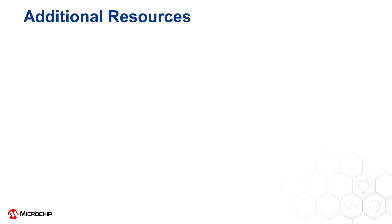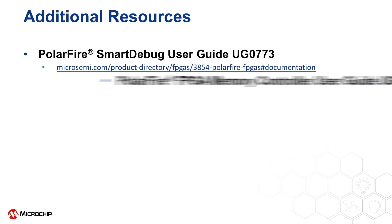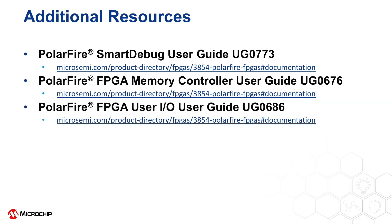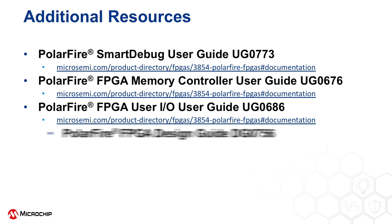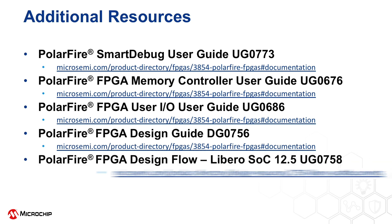I hope you found the overview of the DDR IO margin analysis tool interesting. For additional information, please make use of the following documentation: PolarFire Smart Debug User Guide UG0773, PolarFire FPGA Memory Controller User Guide UG0676, PolarFire FPGA User IO User Guide UG0686, PolarFire FPGA Design Guide DG0756, and the PolarFire FPGA Design Flow for Libero SOC 12.5 User Guide UG0758. Thank you!